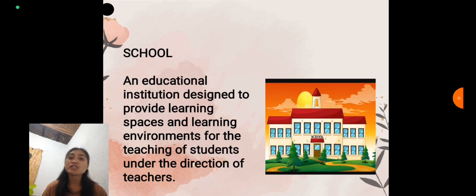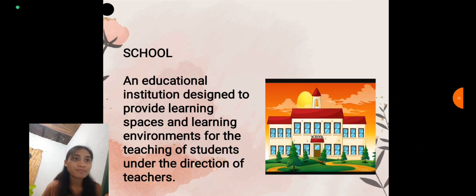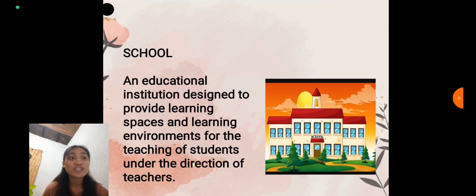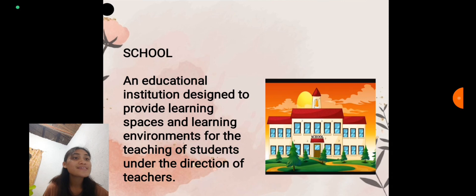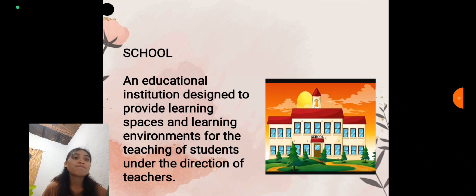Let's begin by defining what a school is. A school is an educational institution designed to provide learning spaces and environments for the teaching of students under the direction of teachers. It is a structured environment that facilitates learning and provides opportunities for personnel and their academic growth.